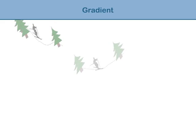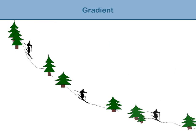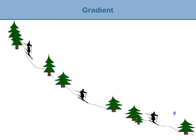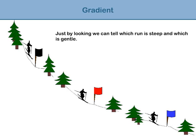All skiers know that ski runs are color-coded. Blue is for gentle runs, red is for medium, and black is for steeper runs. Ski runs are categorized by the gradient. Just by looking, we can tell which run is steep and which is gentle. We are going to learn how to calculate the gradient numerically.